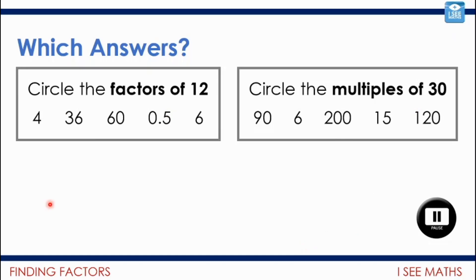Okay, so let's have a look. The factors of 12. Well, four and six are factors of 12. 36 is a multiple of 12, not a factor. And it can't be 0.5 because factors, we're looking always at whole numbers. And multiples of 30. Well, 90 is, 120 is. Six is a factor, not a multiple. 200 is not a multiple of 30. Because if I count up in 30s, 200 is not in that count. Again, 15 is a factor. They were like the red herrings there.